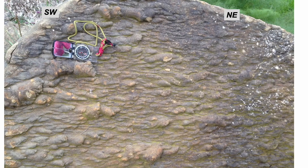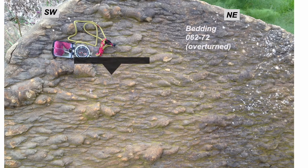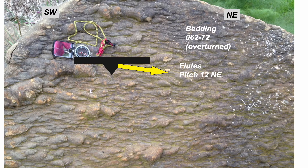Here's a final example. Again we see the undersurface of a sandstone bed rotated to an overturned state. There's the bedding orientation, and on that bedding plane we can see the flow axis defined by the elongate direction of the flutes, pitching down to the right toward the northeast at 12 degrees. In this example the flow revealed by the flutes is in the opposite direction — back up toward the southwest in its current orientation.